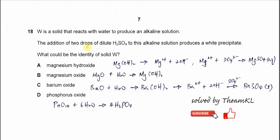Question 80. W is a solid that reacts with water to produce an alkaline solution. From this statement we know that W should be group 1 or group 2 oxide or hydroxide.